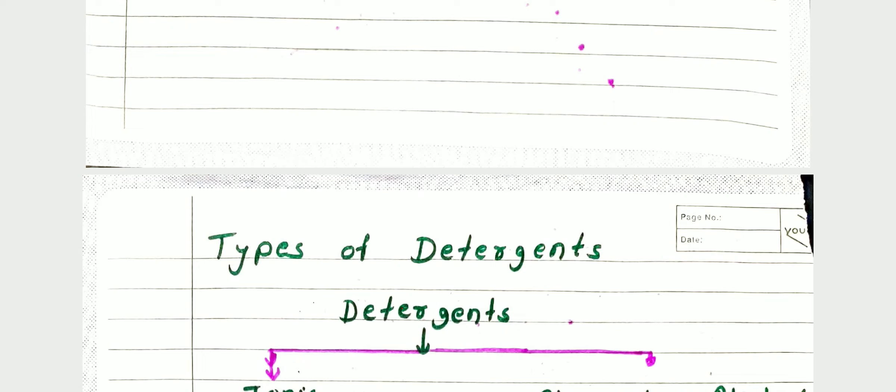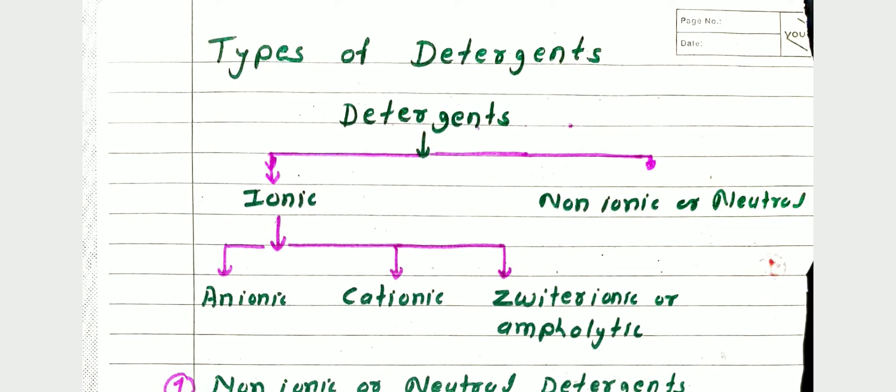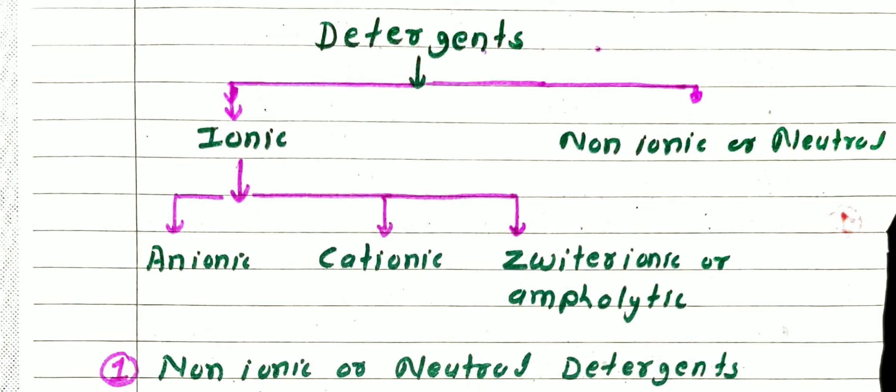Now we study the types of detergent. Detergents are mainly classified into two types: first is ionic detergents, and another main type is non-ionic or neutral detergents. Ionic detergents are further classified into three types: anionic detergents, cationic detergents, and ampholytic or zwitterionic detergents.